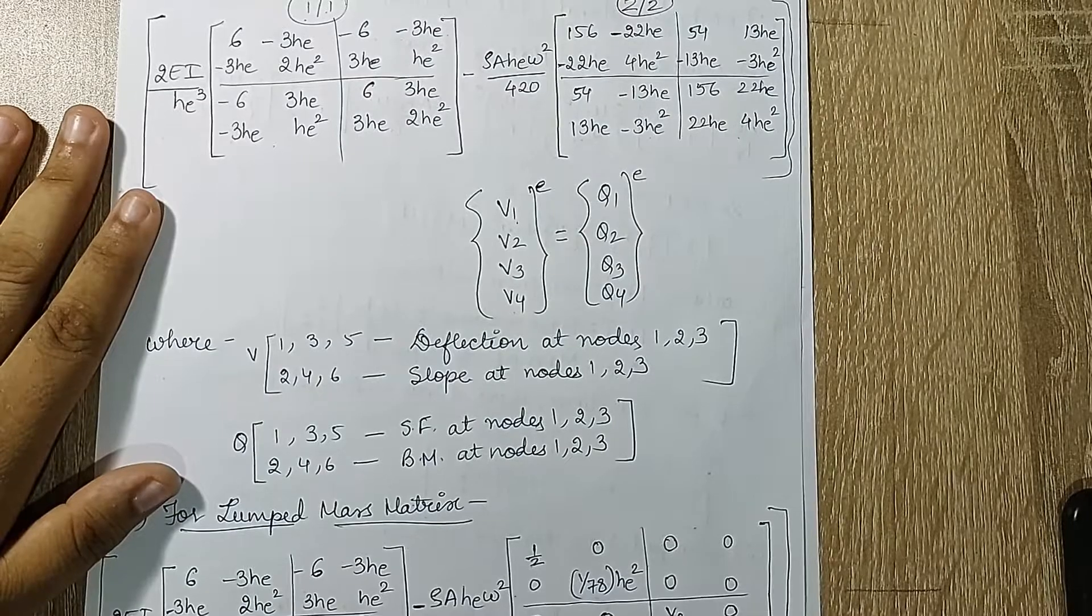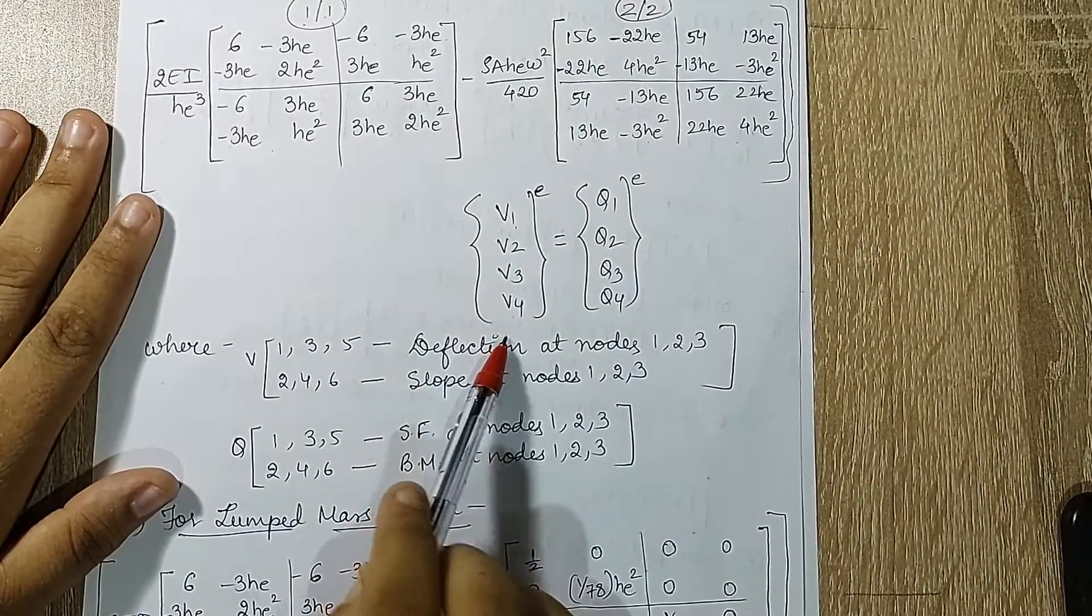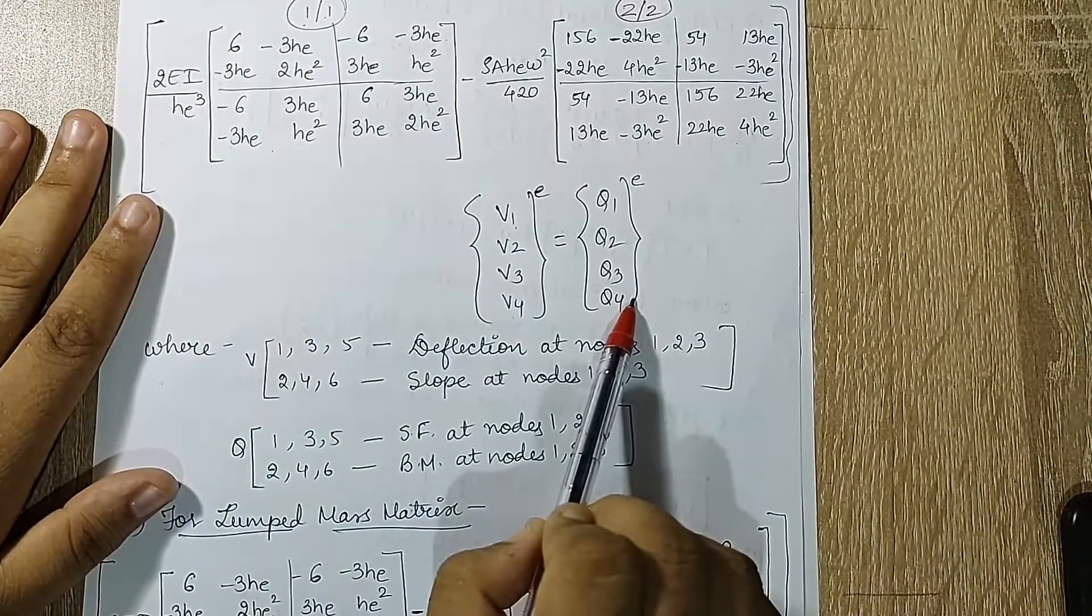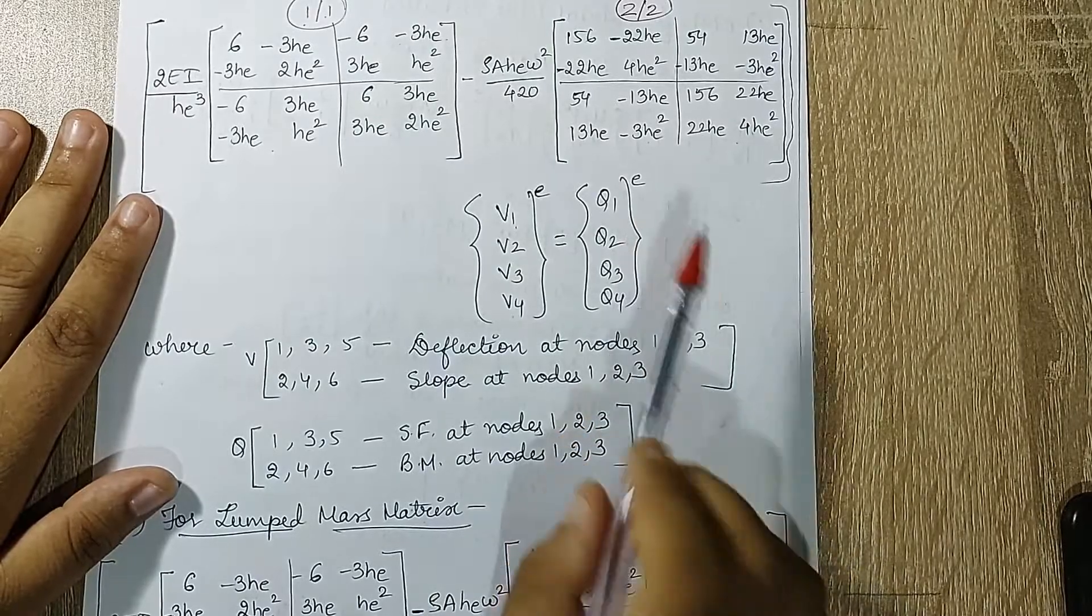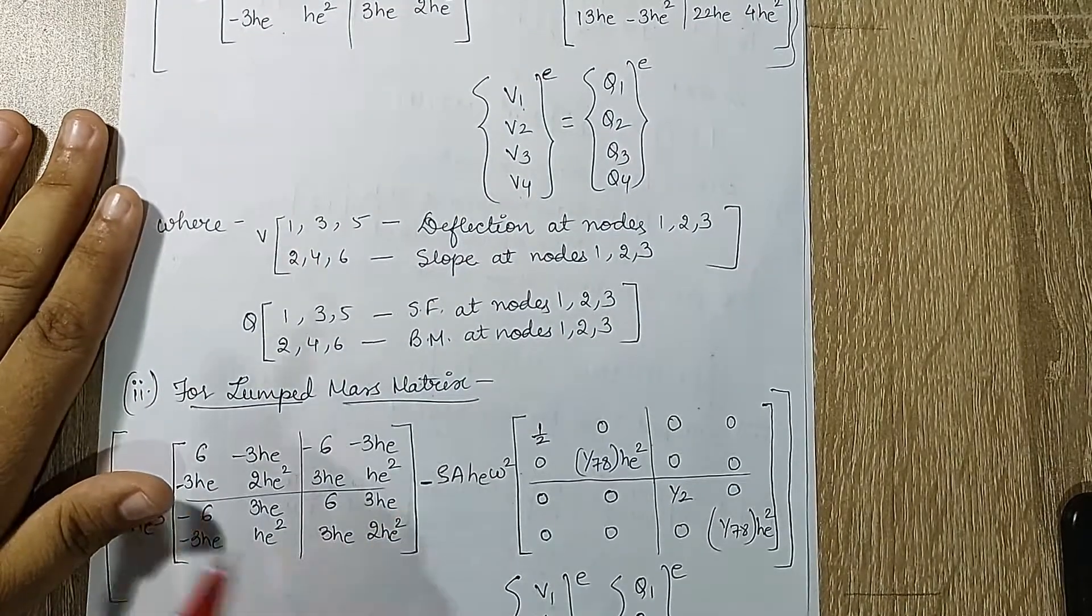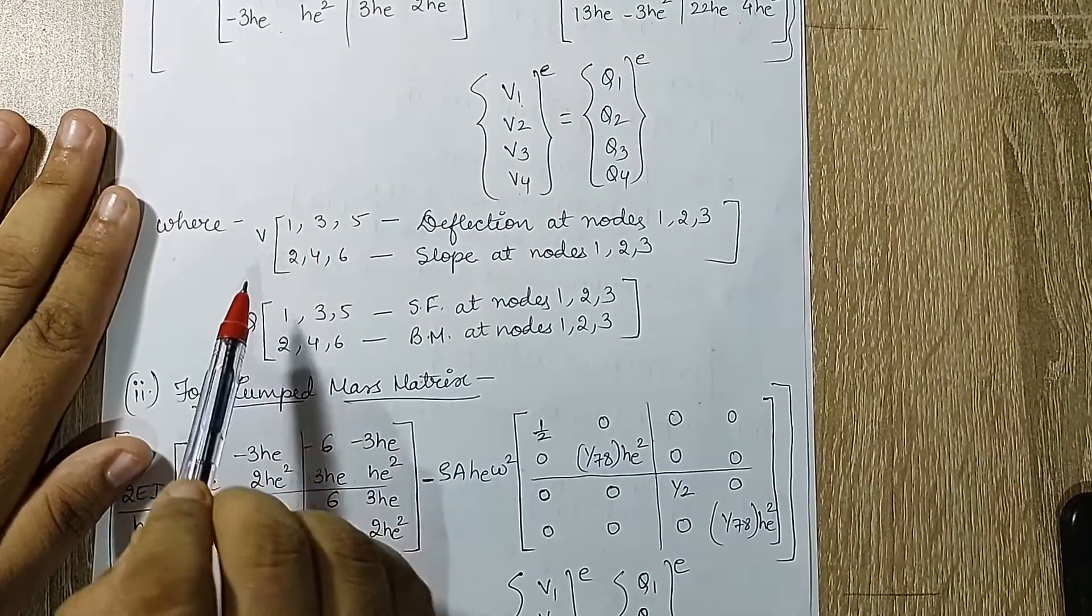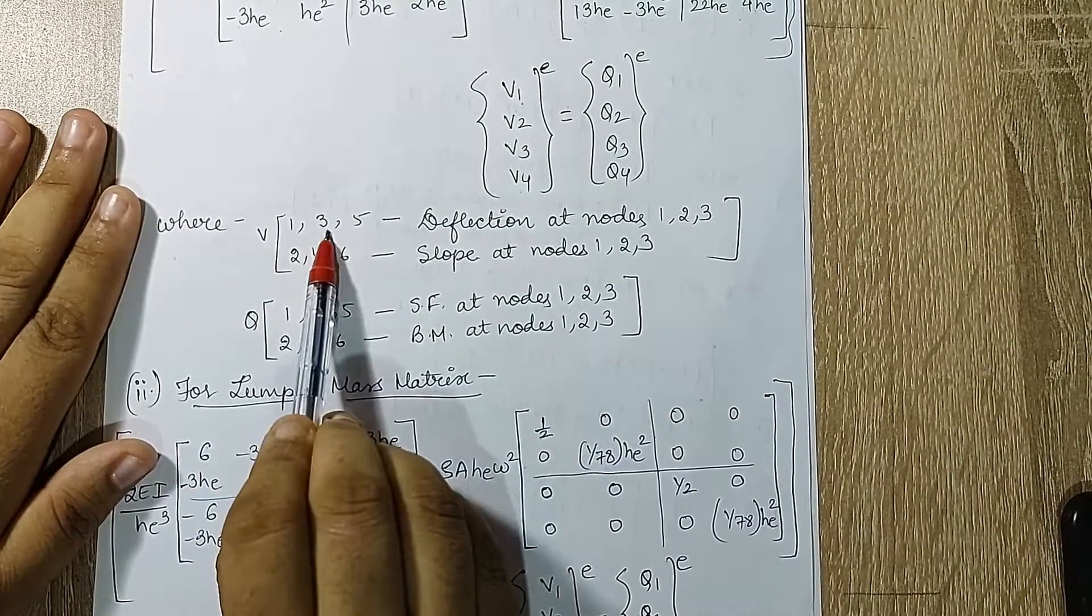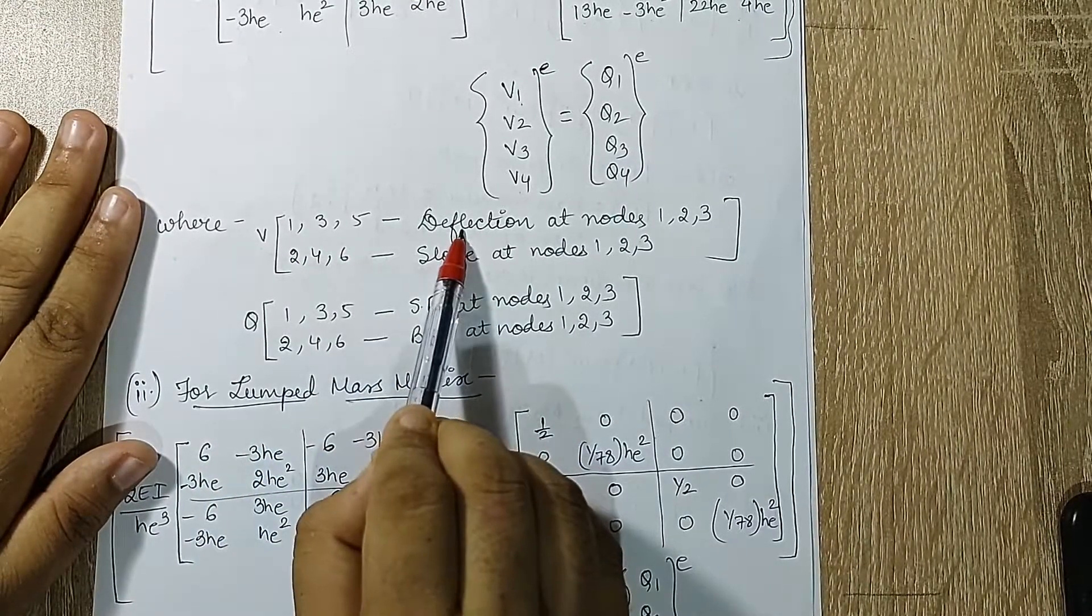Previously you were using {u1, u2}, so here it is just {v1, v2}, and it is equal to {q1, q2, q3, q4} raised to E. Now what do they stand for? We'll look, and we know this already. v1, v3, v5 will indicate deflection.